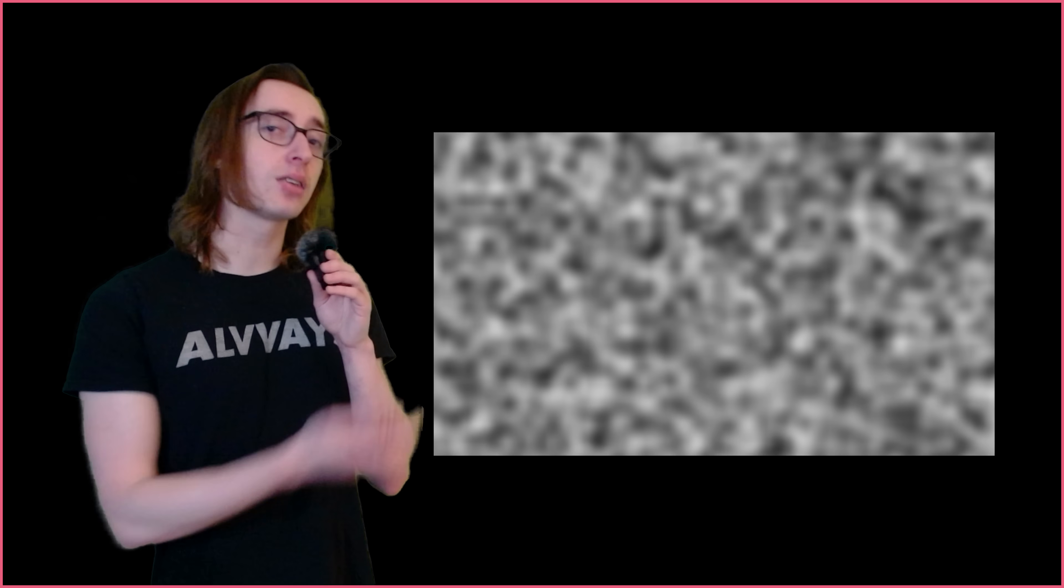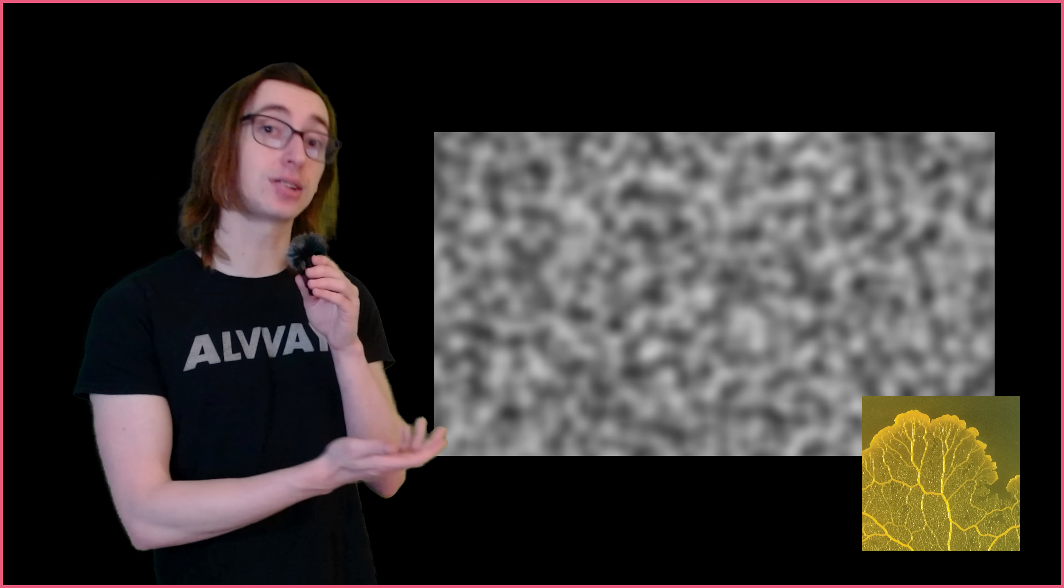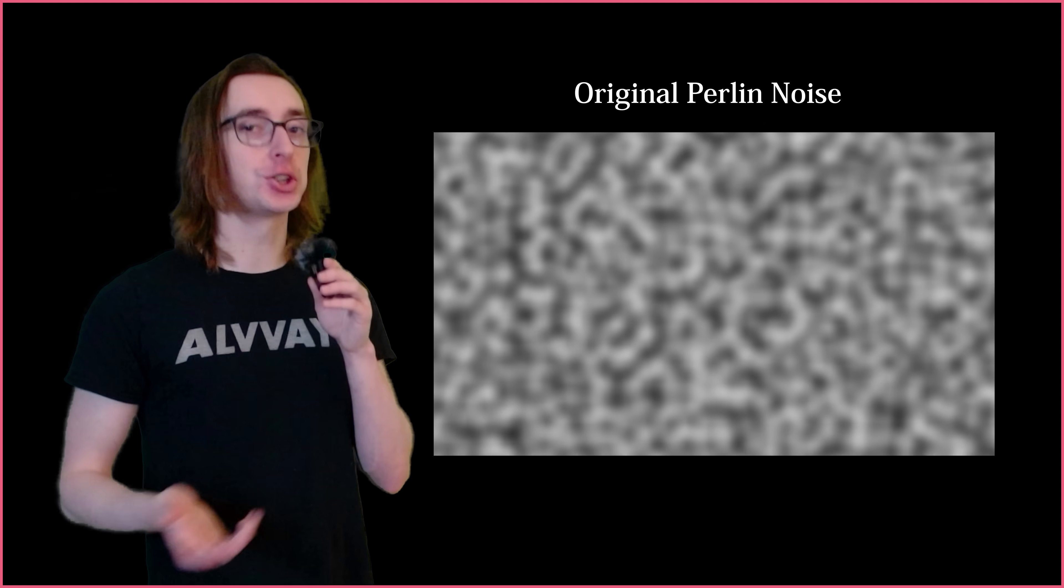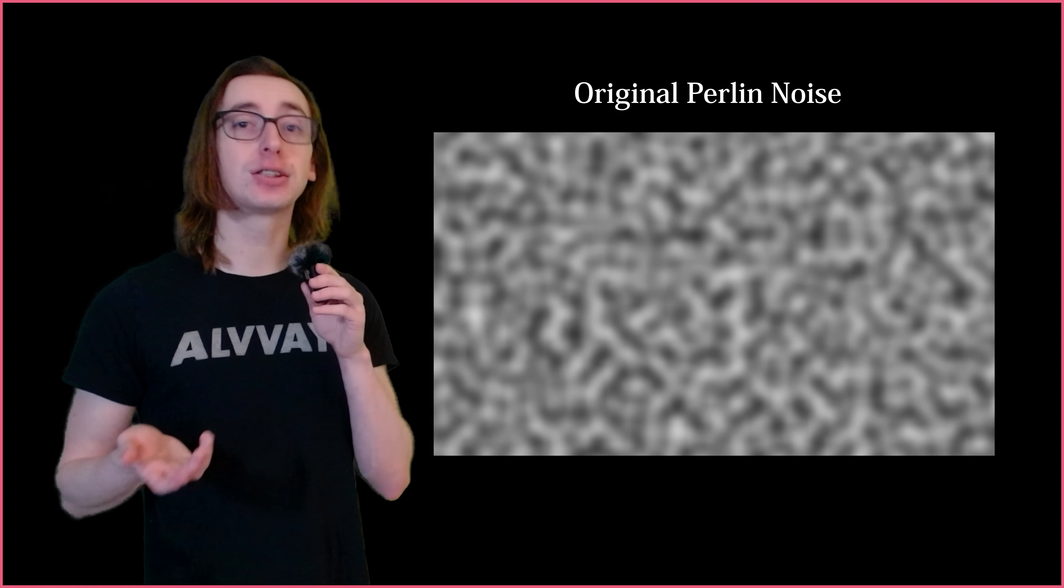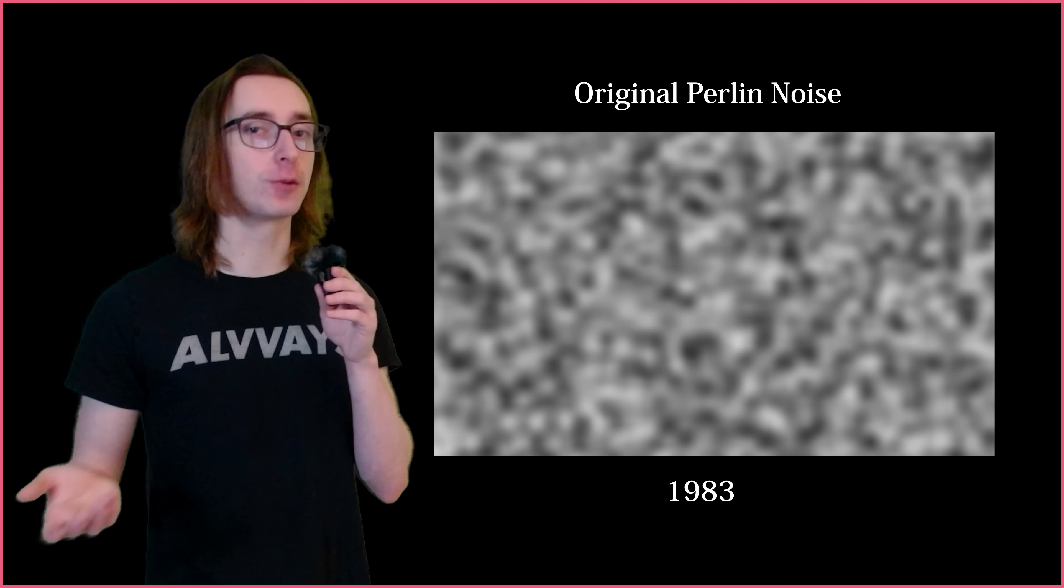Unlike value noise, perlin noise has a pleasant flow to it as a result of the gradient vector approach, giving it a more organic appearance. It sort of looks like slime mold. This is the original perlin noise algorithm invented by Ken Perlin back in 1983, but since then he's made a few improvements.